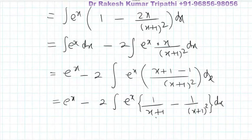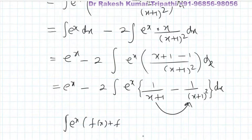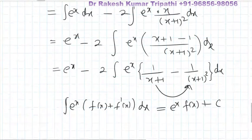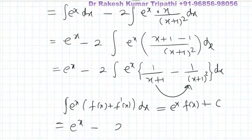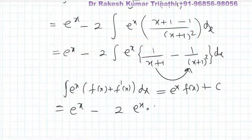The derivative of 1 upon (x plus 1) is minus 1 upon (x plus 1) squared, so we can apply the standard result for the integral of e to the power x times [f(x) plus f'(x)]. Here f(x) is 1 upon (x plus 1) and f'(x) is minus 1 upon (x plus 1) squared. So the final outcome is e to the power x minus twice e to the power x into 1 upon (x plus 1), giving e to the power x times 1 upon (x plus 1), plus constant c.